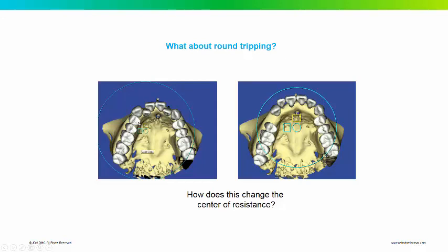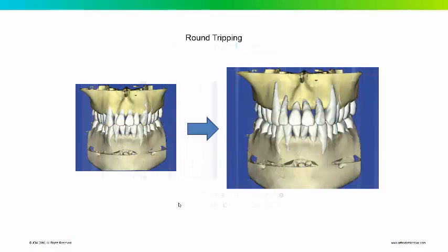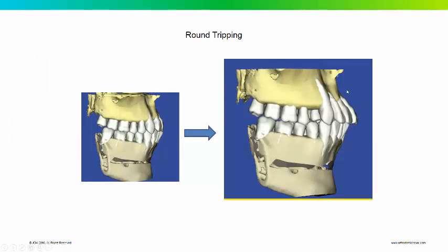We extracted the upper right unilateral bicuspid. Here, I simulated the treatment as if we were round tripping the teeth — moving these teeth around to get them to align, similar to round wire. You can see what happened: a significant amount of dehiscence. And I haven't even simulated putting rectangular wire in here. You can only imagine that if these teeth were torqued, the dehiscence would be significantly more.